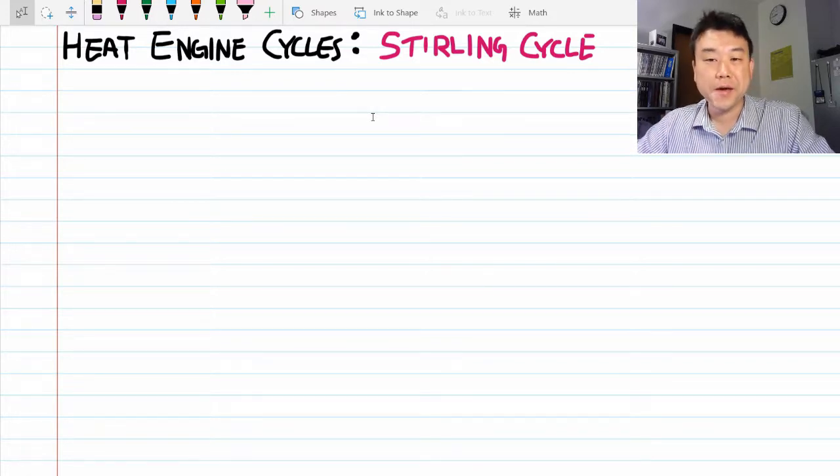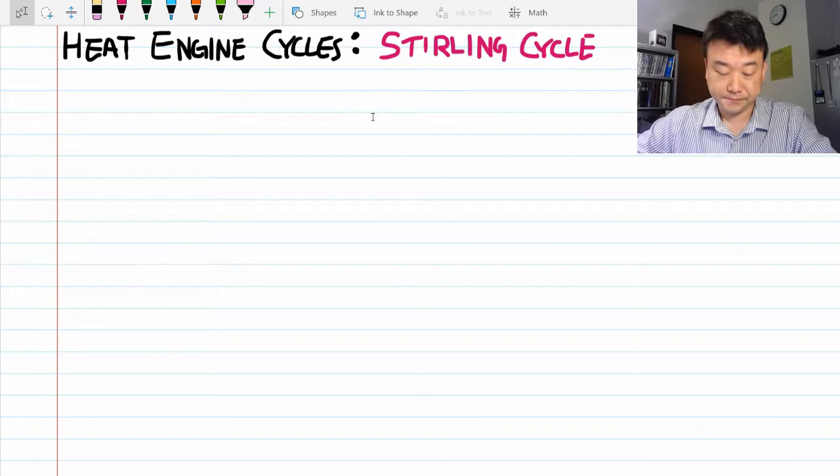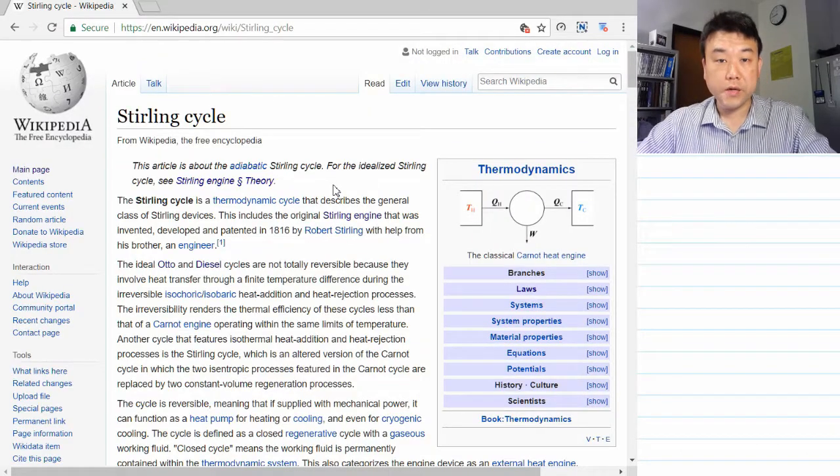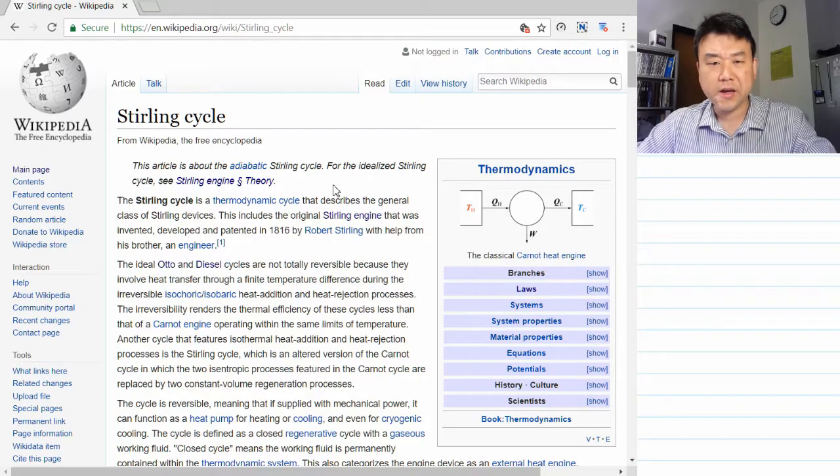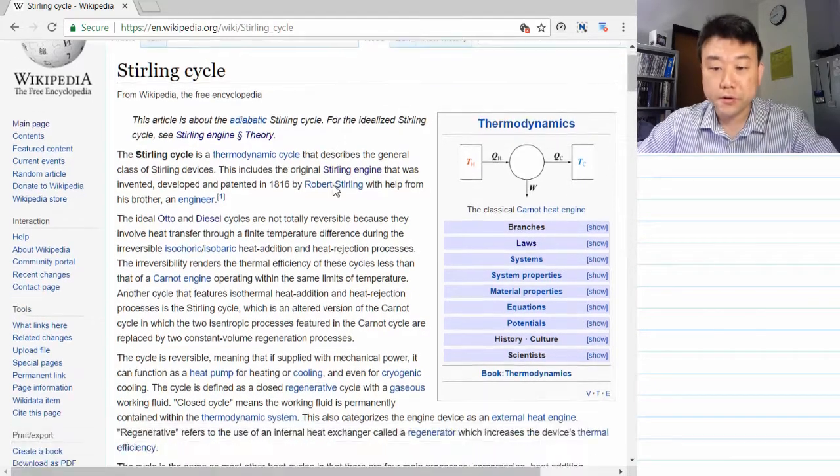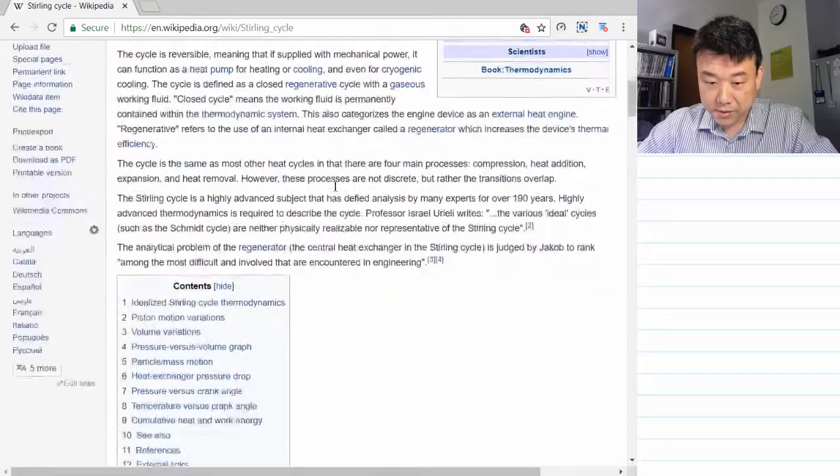Let me show you the Wikipedia page for the Stirling cycle. So this is the Wikipedia page for the Stirling cycle and there's an interesting history behind the Stirling engine. You can read about it on your own. Let me scroll down here for the cycle.